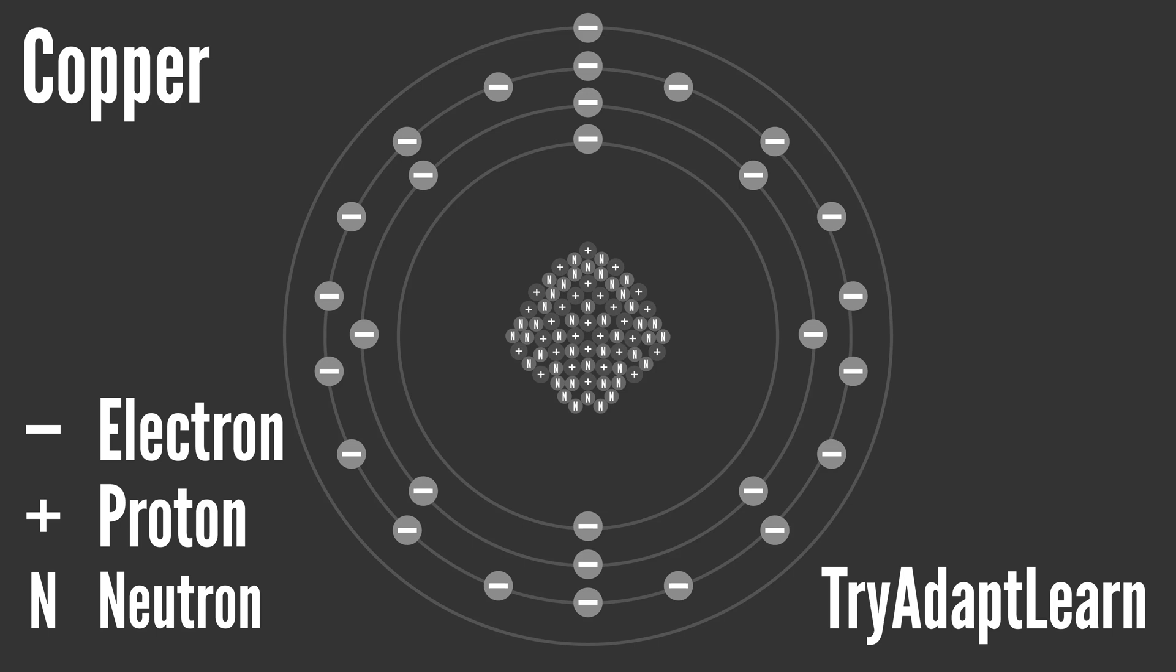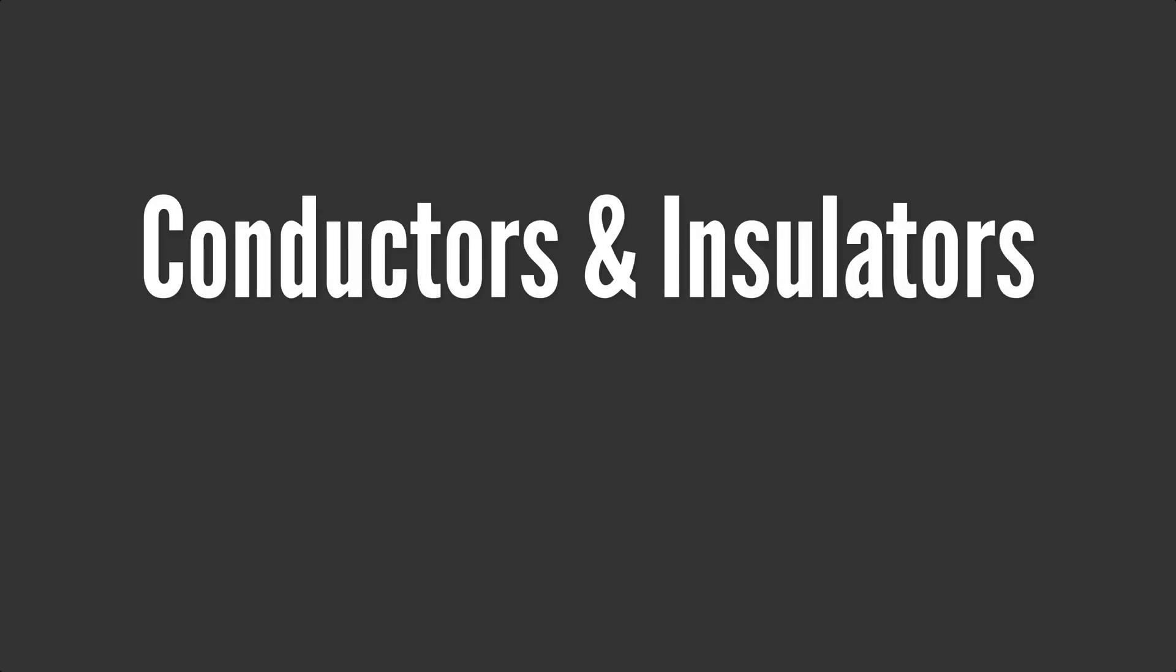Again, the movement of electrons from atom to atom can be referred to when describing electricity or discussing electrical flow or electrical current. Now that we've discussed electricity or the flow of electrical current or electrons from atom to atom, let's discuss conductors and insulators.